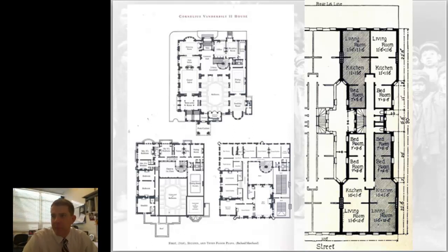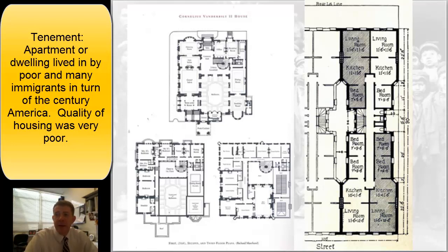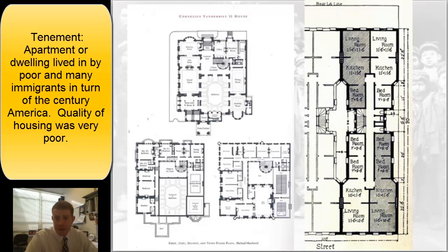This is a classic dumbbell tenement floor plan. A tenement is a dwelling in which a family or many families would have to live during the late 19th and early 20th century, with poor living conditions and poor ventilation. Oftentimes the only bathroom was for the entire building and was outside. The floor plan shows a small bedroom, small kitchen, and small living room. Families of five to seven people, sometimes more than one family, lived in these tenements.